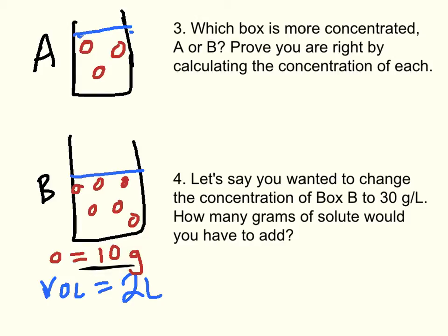If you have three dots, that means your mass is 30 grams. We know the volume is 2 liters. So 30 grams over 2 liters equals 15 grams per liter for box A.